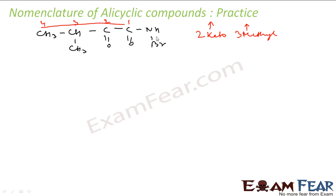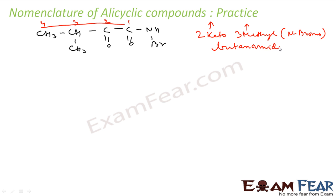And then I have a bromine with nitrogen. I write nitrogen. It is butane — all single bonds — so butanamide, correct, because of the amine group. So it is 2-keto, 3-methyl, N-bromobutanamide.